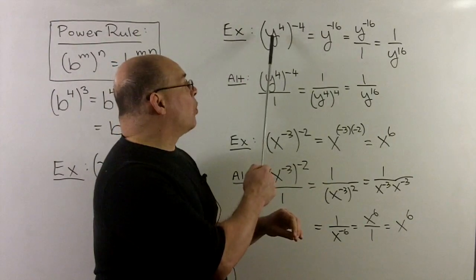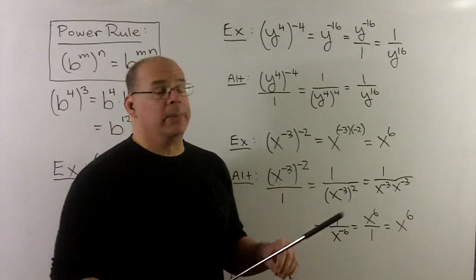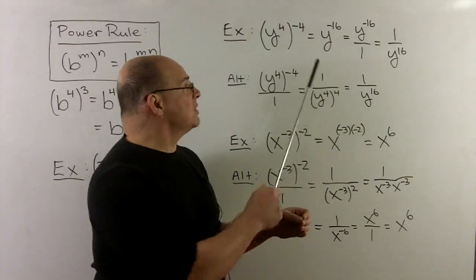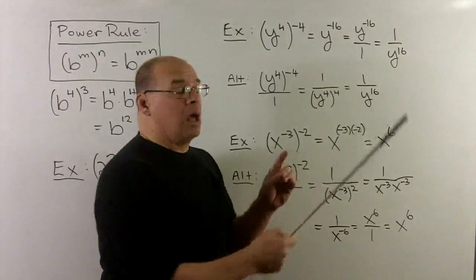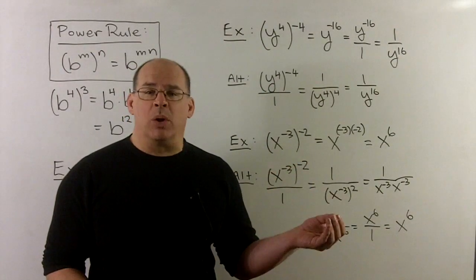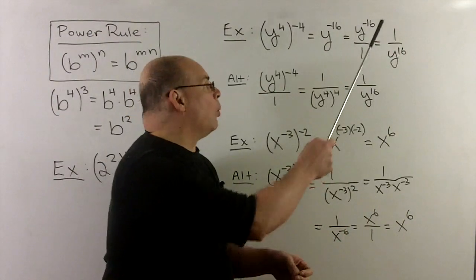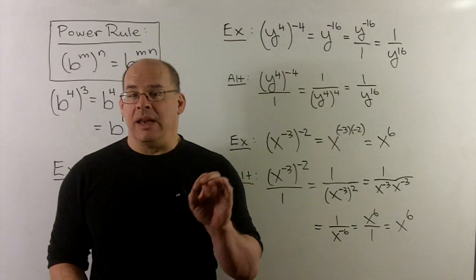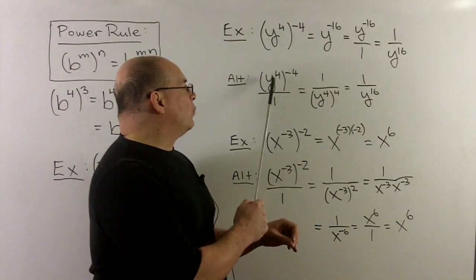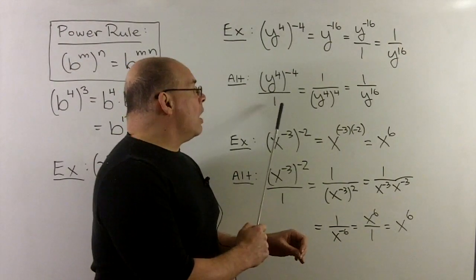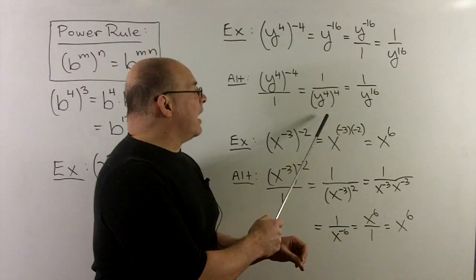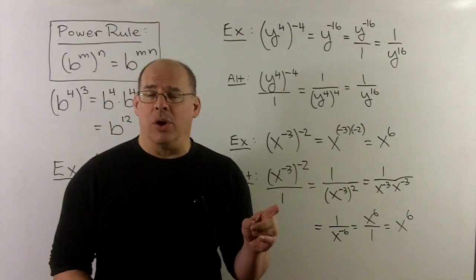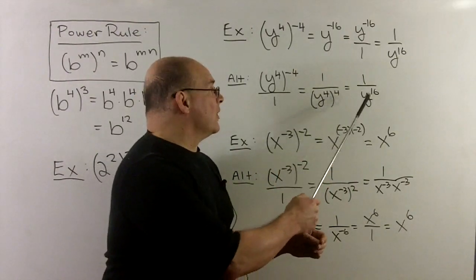First example: let's do y to the fourth raised to the minus four. By the rule, we drop the parentheses and multiply the exponents to get y to the minus sixteen. I'll put that over a one, and then for the negative exponent, we just cross the bar, so I get one over y to the sixteen. Now if I wanted to deal with the negative exponent directly, I could take y to the four raised to the minus four, put this over a one, cross the bar, which gives us one over y to the four to the fourth power, and that goes to one over y to the sixteen. So that's consistent.